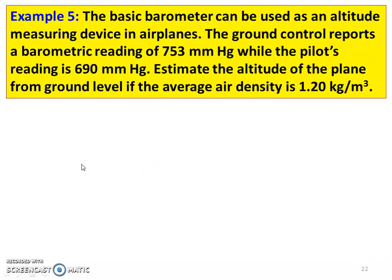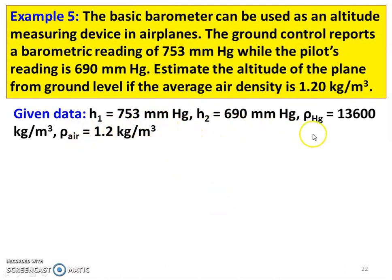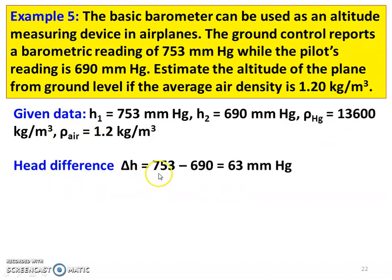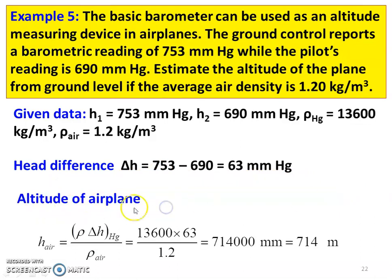Fifth question: A barometer can be used as an altitude measuring device in an airplane. The ground control reports a barometer reading of 753 mm of mercury, while the pilot's reading is 690 mm of mercury. Estimate the altitude of the plane from ground level if the average air density is 1.2 kg/m³. Given: h1 = 753 mm Hg, h2 = 690 mm Hg, rho_Hg = 13,600, rho_air = 1.2 kg/m³. Delta h = 753 − 690 = 63 mm of mercury. Altitude = rho_Hg × delta h divided by rho_air = 13,600 × 63 divided by 1.2 = 714,000 mm = 714 meter. The height of the airplane is 714 meter.